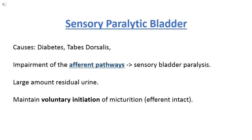Next is sensory paralytic bladder. The causes include diabetes and tabes dorsalis. It is caused by impairment of the afferent pathway innervating the bladder, so there is sensory bladder paralysis. There will be a large amount of residual urine. Patients maintain voluntary initiation of micturition because efferent pathways are still intact.